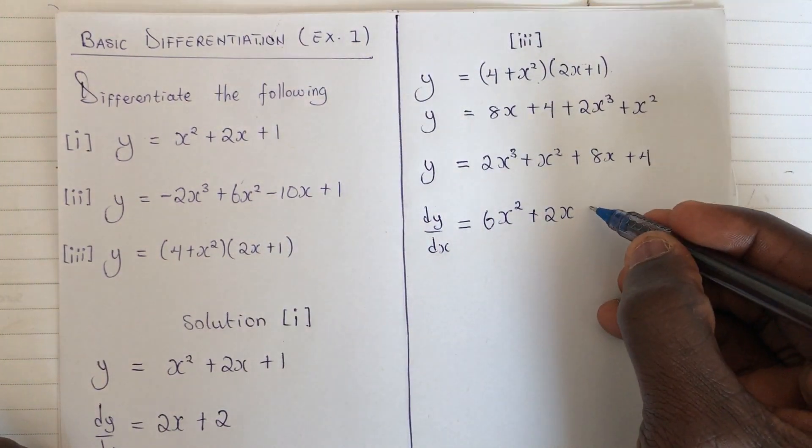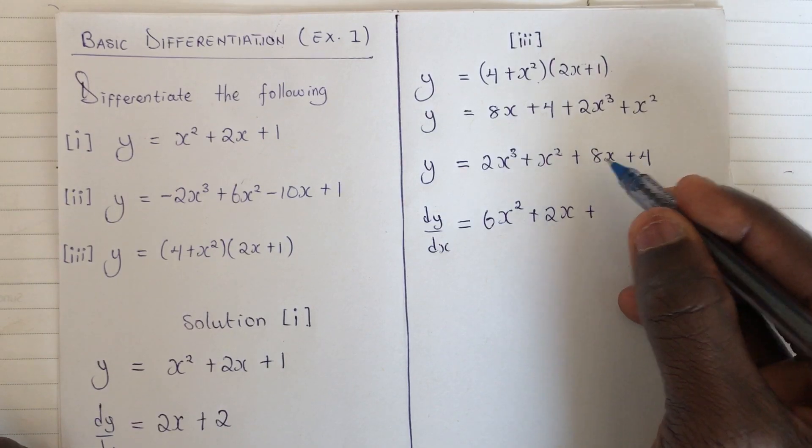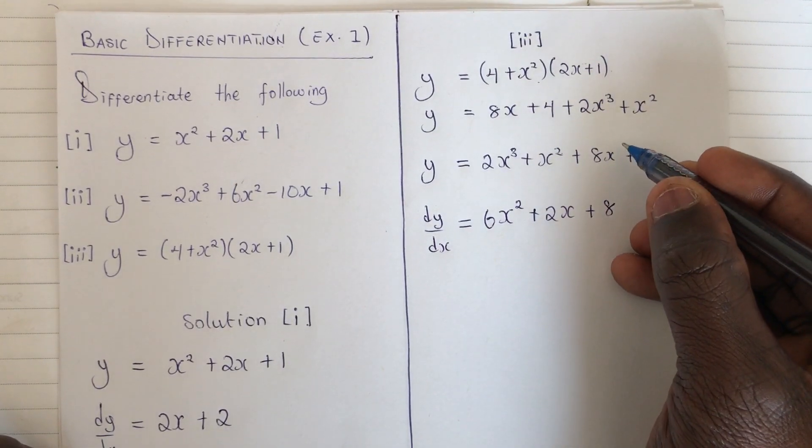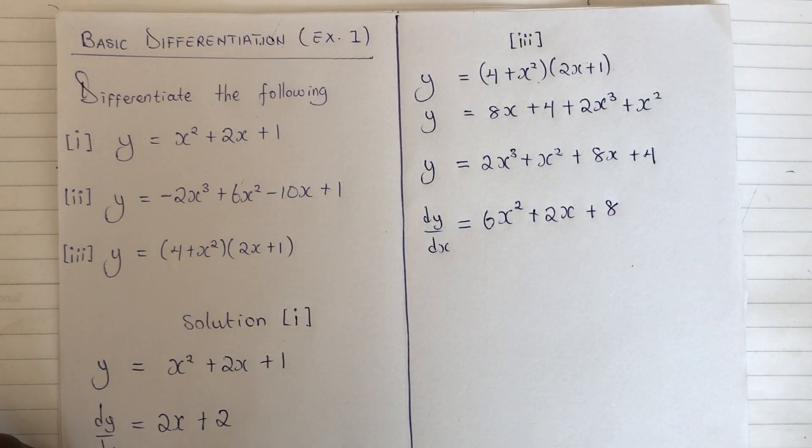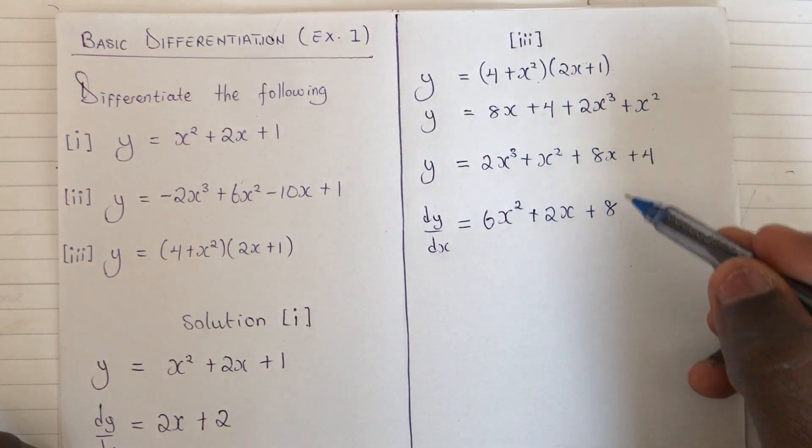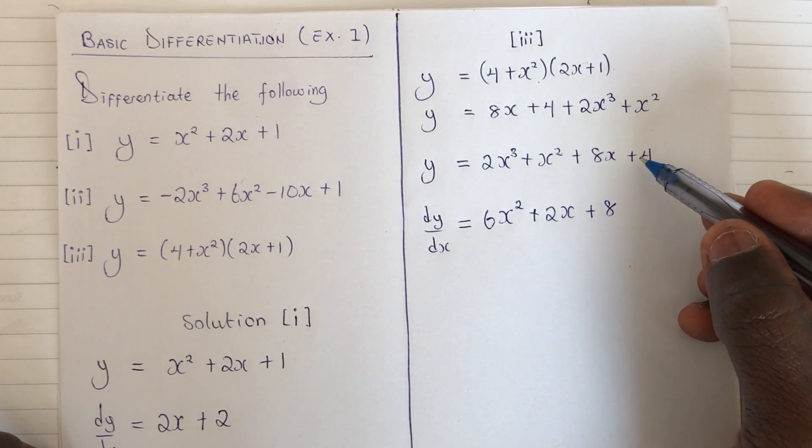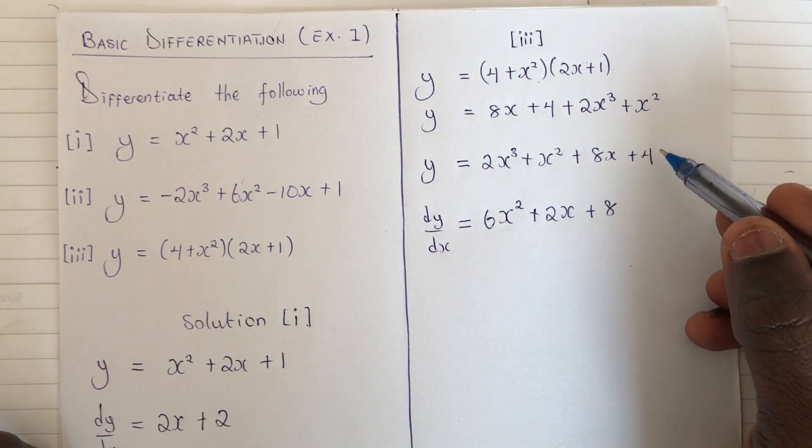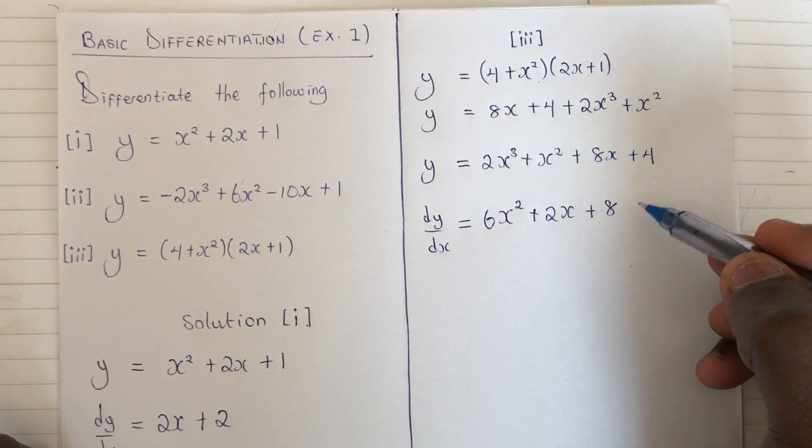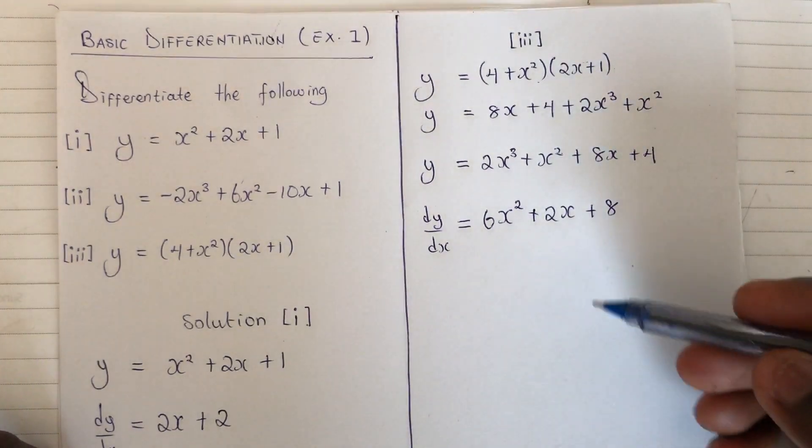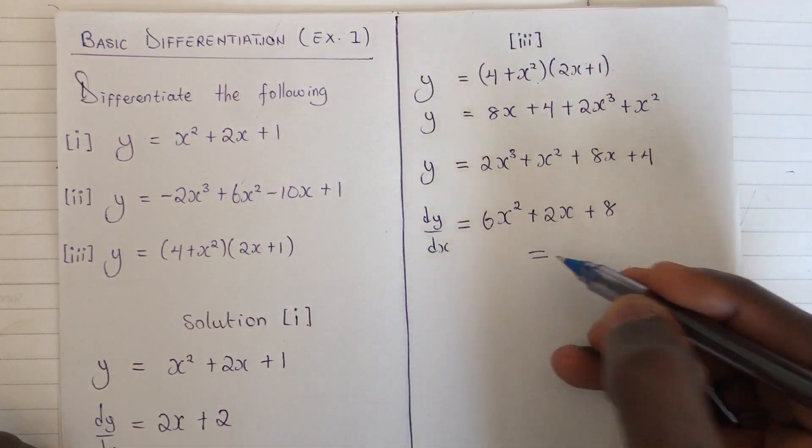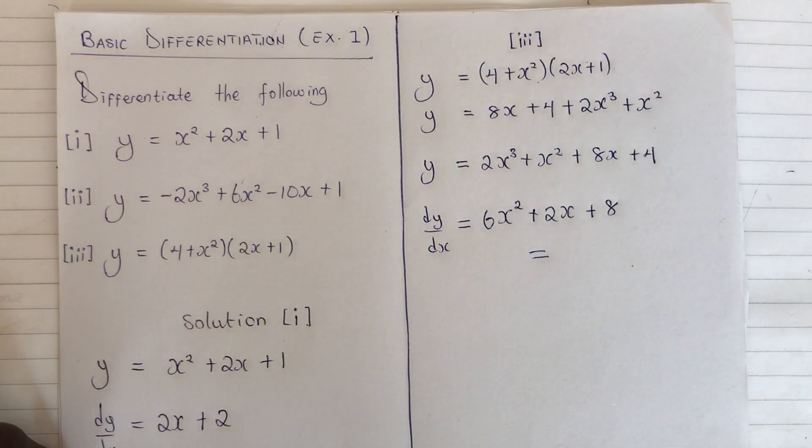We move on to this, plus 1 times 8, we have 8. 1 minus 1, x to power 0, x to power 0 is 1. The 1 times the 8 will give you 8. Then plus the constant, differential of a constant is 0, so plus 0 is nothing. So just forget about the 0. This is your final result. So we are having 6x squared plus 2x plus 8, as simple as that.